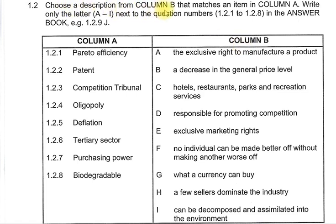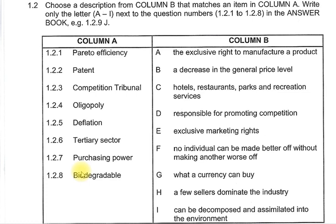Choose a description from Column B that matches an item in Column A. Write only the letter A to I next to question numbers 1.2.1 to 1.2.8 in the answer book. For example, 1.2.9. The items in Column A are: Pareto efficiency, patent, competition tribunal, oligopoly, deflation, tertiary sector, purchasing power, and biodegradable.